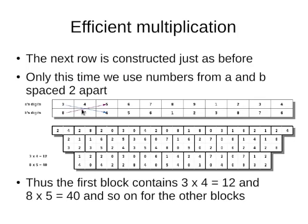And I have three times four is twelve, and eight times five is forty. For this block, I take four times five is twenty, and seven times six is forty-two. And so I construct the full pyramid.